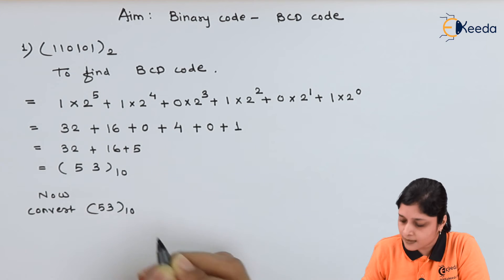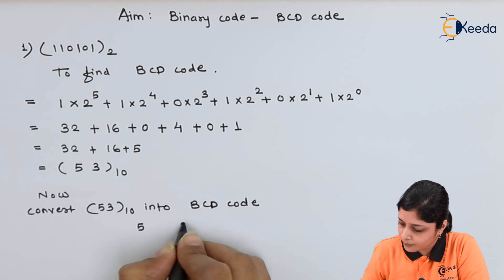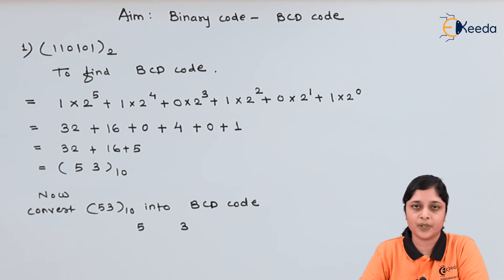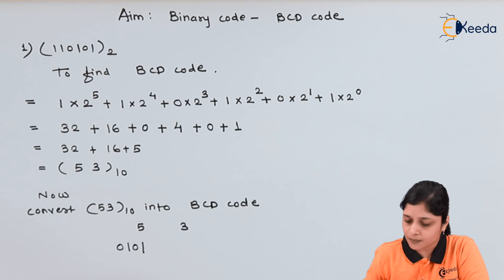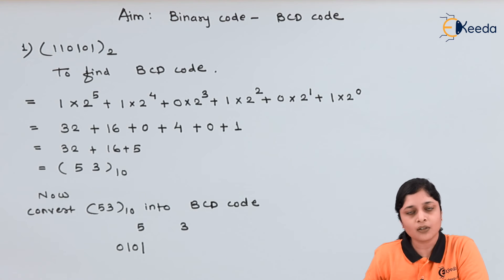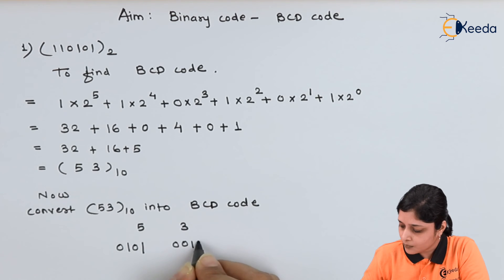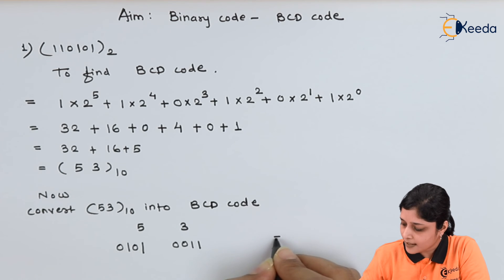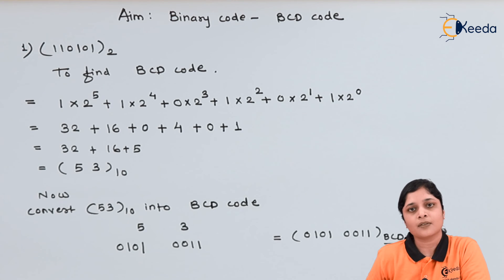Convert this decimal into BCD code. You have 5 and 3. BCD codes are of 4 bits, so represent 5 in terms of 4 bits: 0101. You can apply logic directly or use the successive division method to calculate. For 5: 0101. For 3: 0011. Don't forget to write all 4 bits. So your answer is 0101 0011 in BCD. Always write down the base for the final answer.